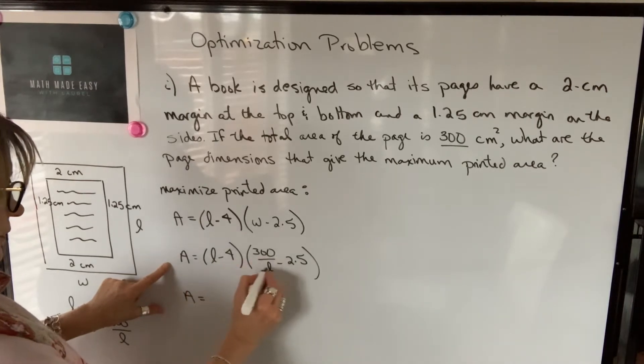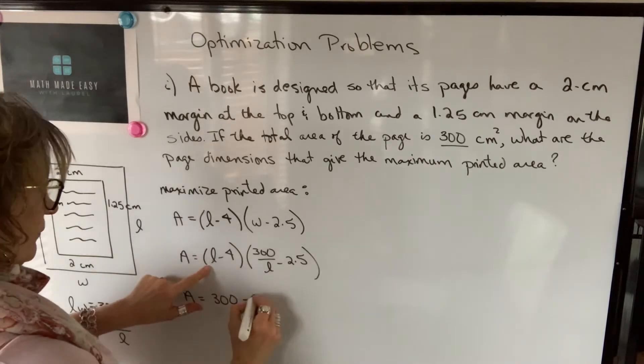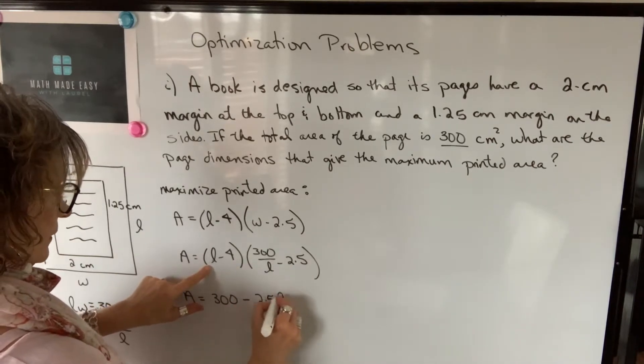So L times 300 divided by L will be 300. Minus L times 2.5 will be 2.5L. So I'm just foiling.